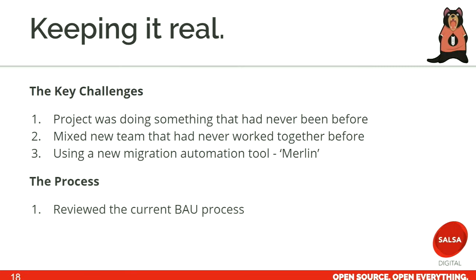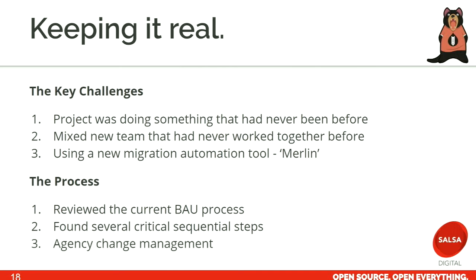The process: we reviewed the current BAU processes that were in place that the GovCMS team used with other projects. We also found several critical steps that needed to be taken into account and put into the project processes themselves. Part of the project was also to have agency change management in place so that once the projects were handed over to the agencies, they were actually able to use that as BAU outside the project once the five months was up.